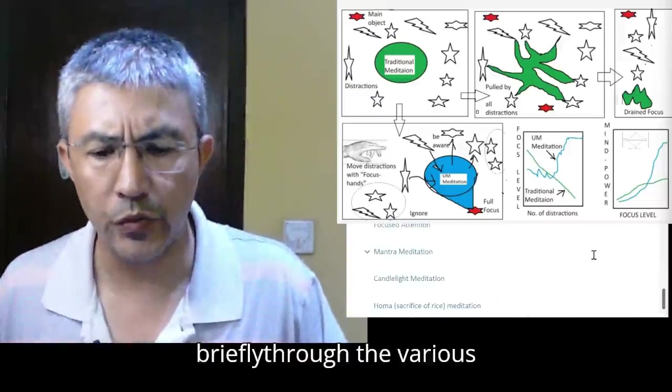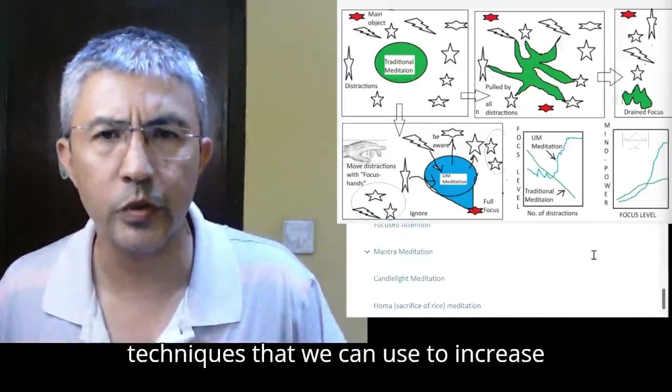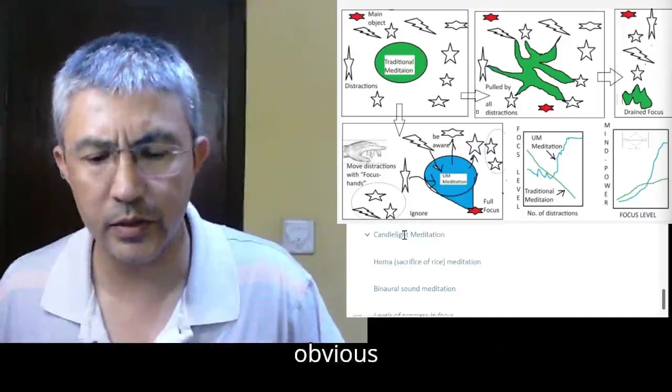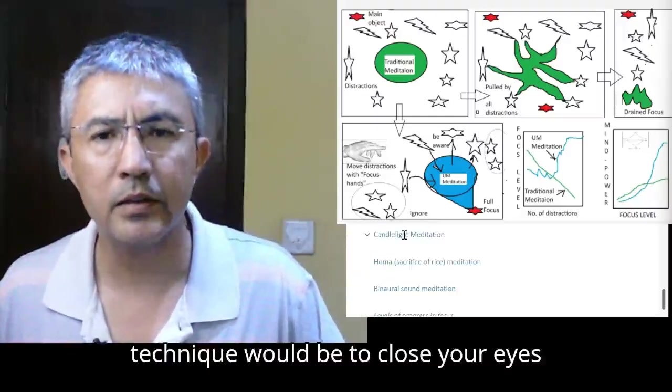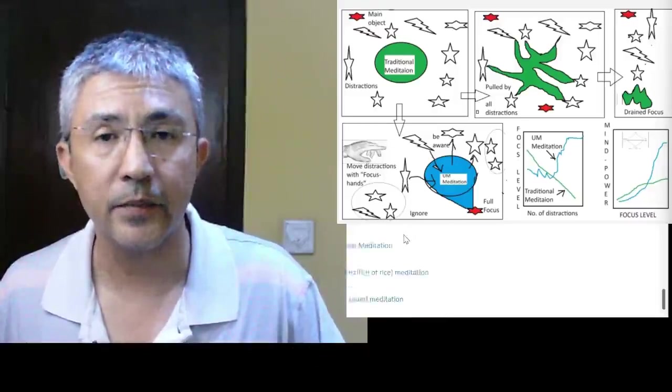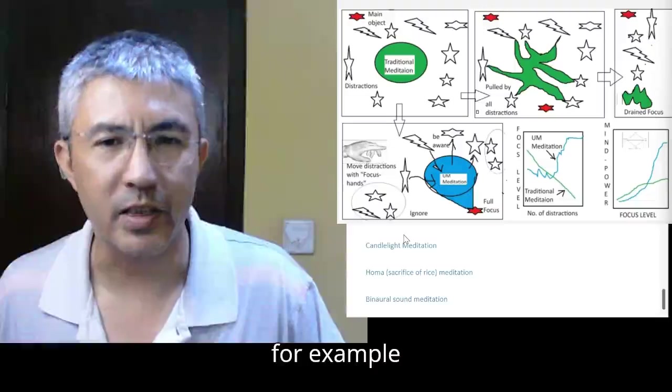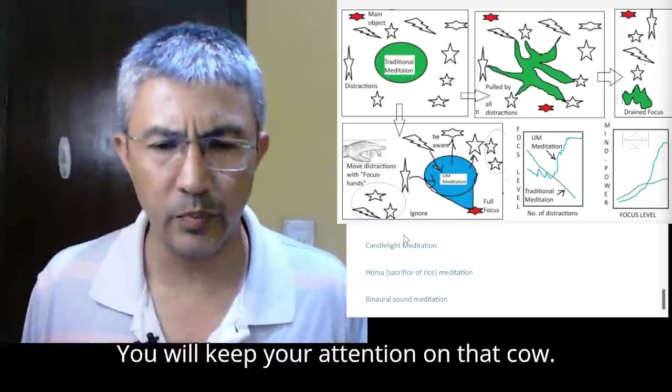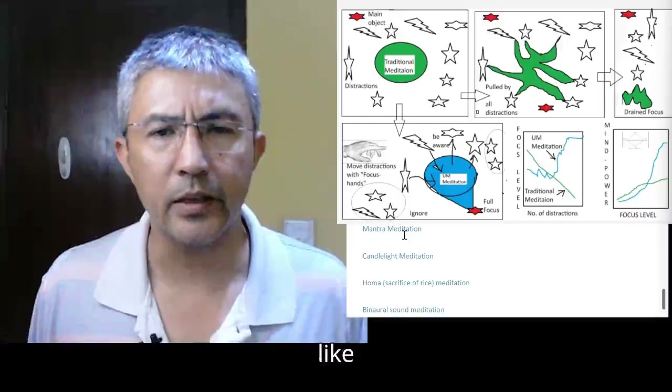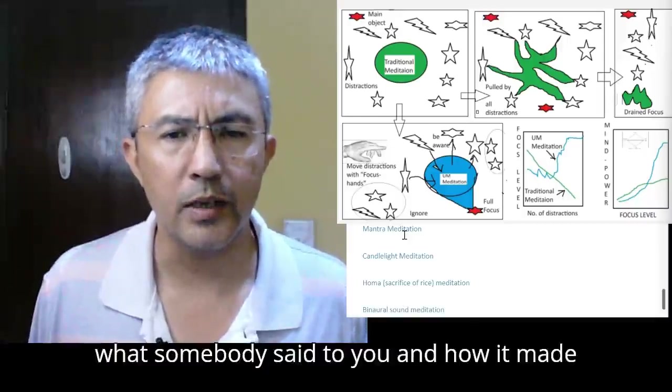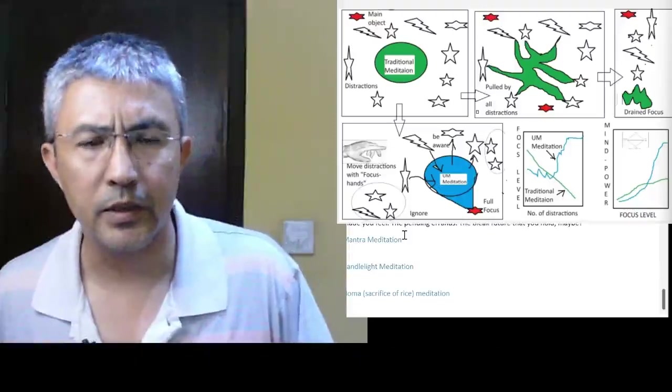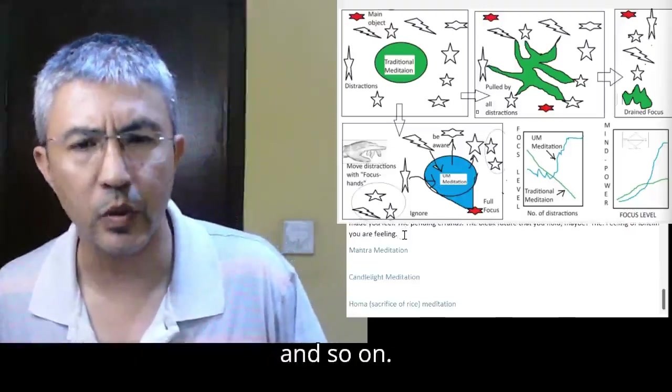Now, I will go briefly through the various techniques that we can use to increase our capacity to focus. The most obvious technique would be to close your eyes and imagine that you want to focus on, say, the image of a cow, for example. Then you will keep your attention on that cow. As soon as you do that, various thoughts and feelings will come, like what somebody said to you and how it made you feel, the pending errands, the bleak future that you hold maybe, the feeling of loneliness you are feeling, and so on.